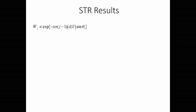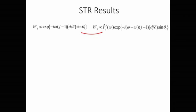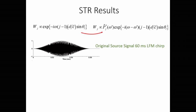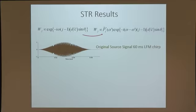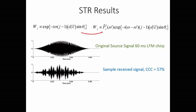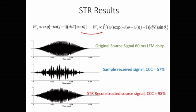Now that we have a beamforming technique that works, I want to apply the beamforming output to synthetic time reversal to recover the source signal. However, I need to change the weight function from the original plane wave beamforming weight to a nonlinear weight function that depends on the received signal itself. Applying synthetic time reversal with this new weight function: the original source signal is a 50-60 millisecond chirp, and the received signal has only 57% correlation. After applying the modified synthetic time reversal, I recover the source signal with 98% correlation.